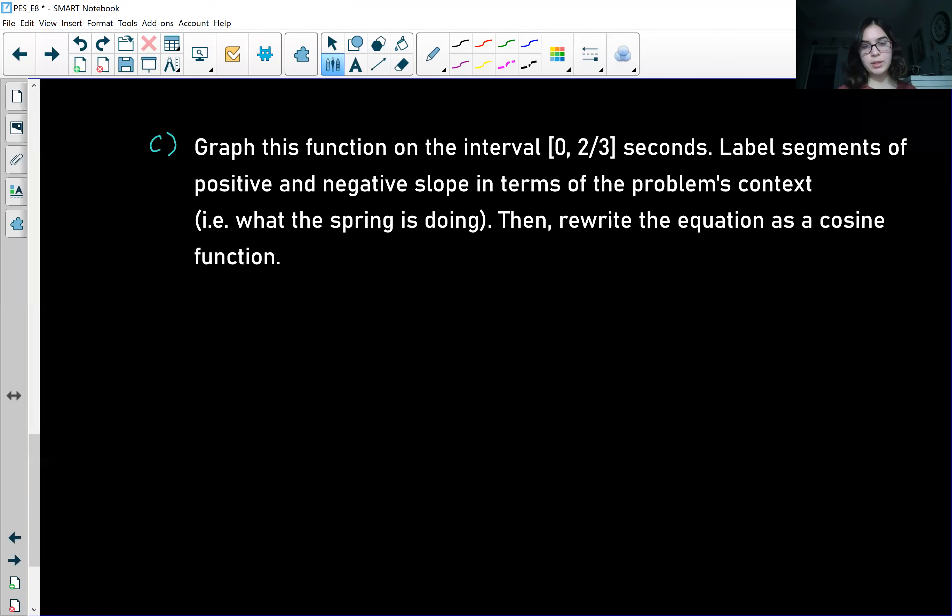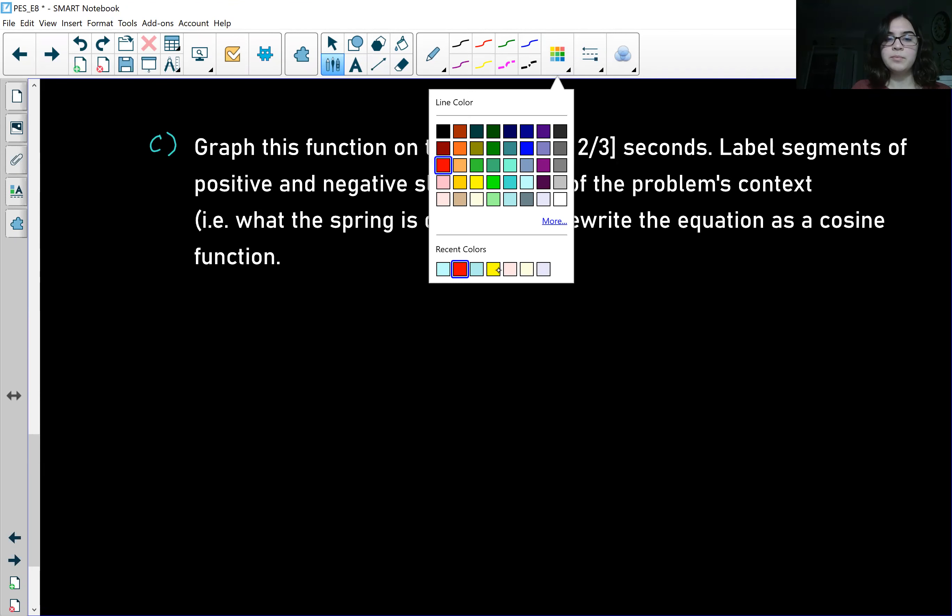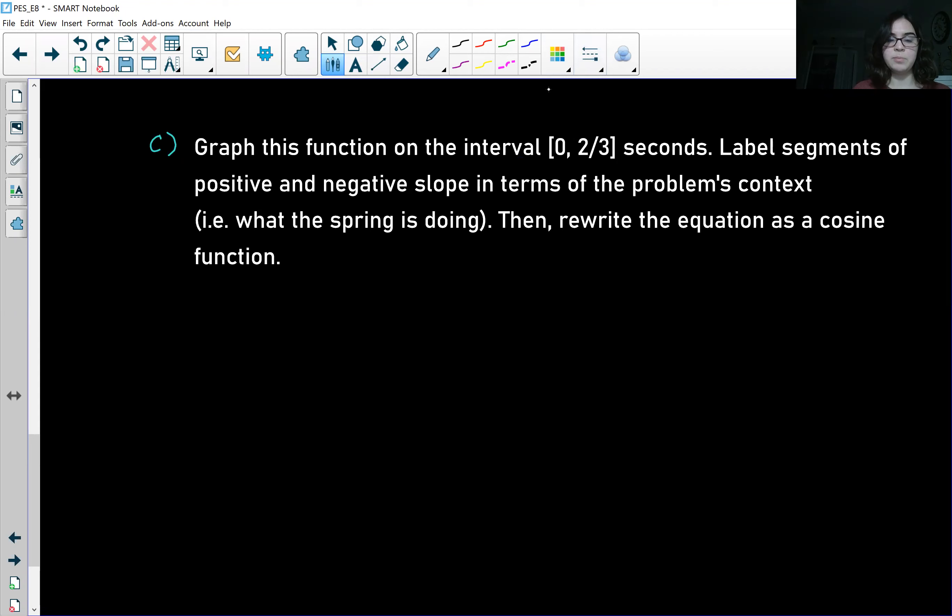Finally, what we're going to do is graph this function on the interval between zero and two-thirds seconds. We're going to label segments of positive and negative slope in terms of what the spring is doing in those time intervals. And then we're going to rewrite the equation as a cosine function. So there's a lot to this one. The first part is graphing the function, so let's go ahead and do that.